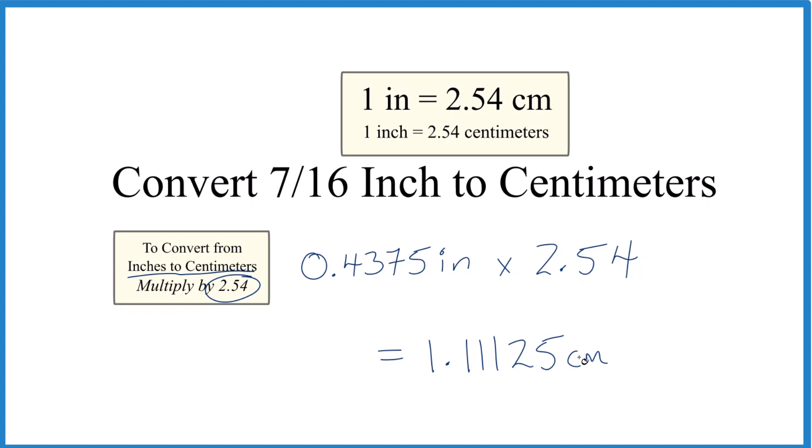If you're thinking about units here, this 2.54 is 2.54 centimeters per inch. So when we multiply, we have inches on the top and the bottom; they cancel out. That's why we have centimeters.